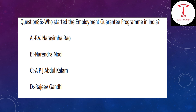Who started the Employment Guarantee Program in India? The options are VV Narasimha Rao, Narendra Modi, APJ Abdul Kalam, and Rajiv Gandhi. The answer is VV Narasimha Rao.